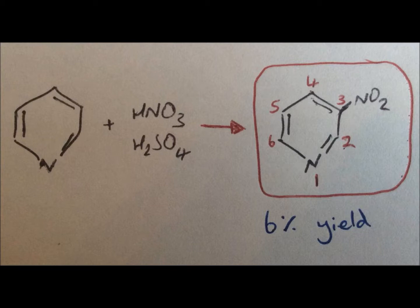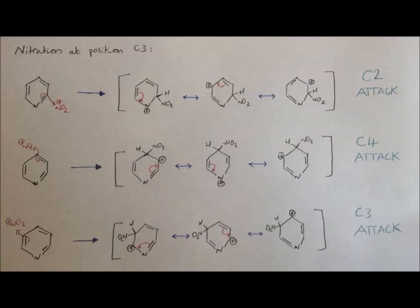The position at which this electrophilic attack occurs is explained by observing the Wieland intermediates. I have shown the differences between C2, C3 and C4 attack here. From this, we can see that with C2 and C4 attack, the positive charge that moves around the ring in resonance becomes localised on the more electronegative nitrogen atom. This is highly unfavourable, and the resonance structure is more stabilised when the positive charge is localised on a carbon atom. Hence, there is a greater chance of C3 attack and the formation of this product.